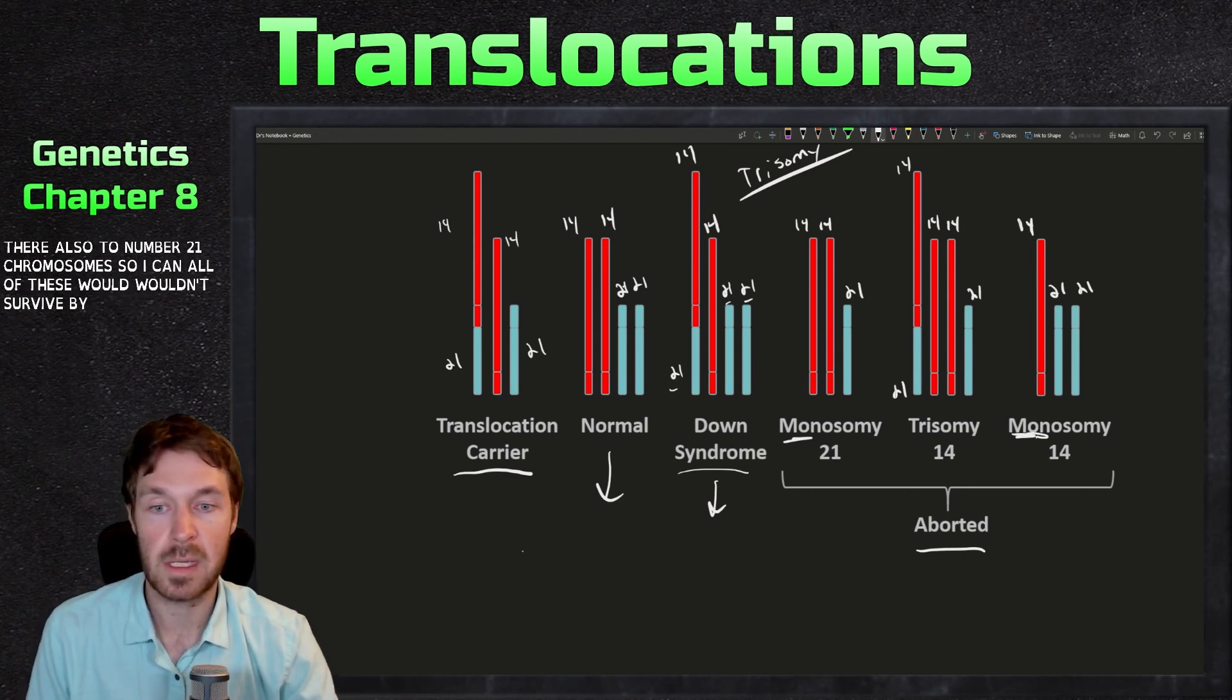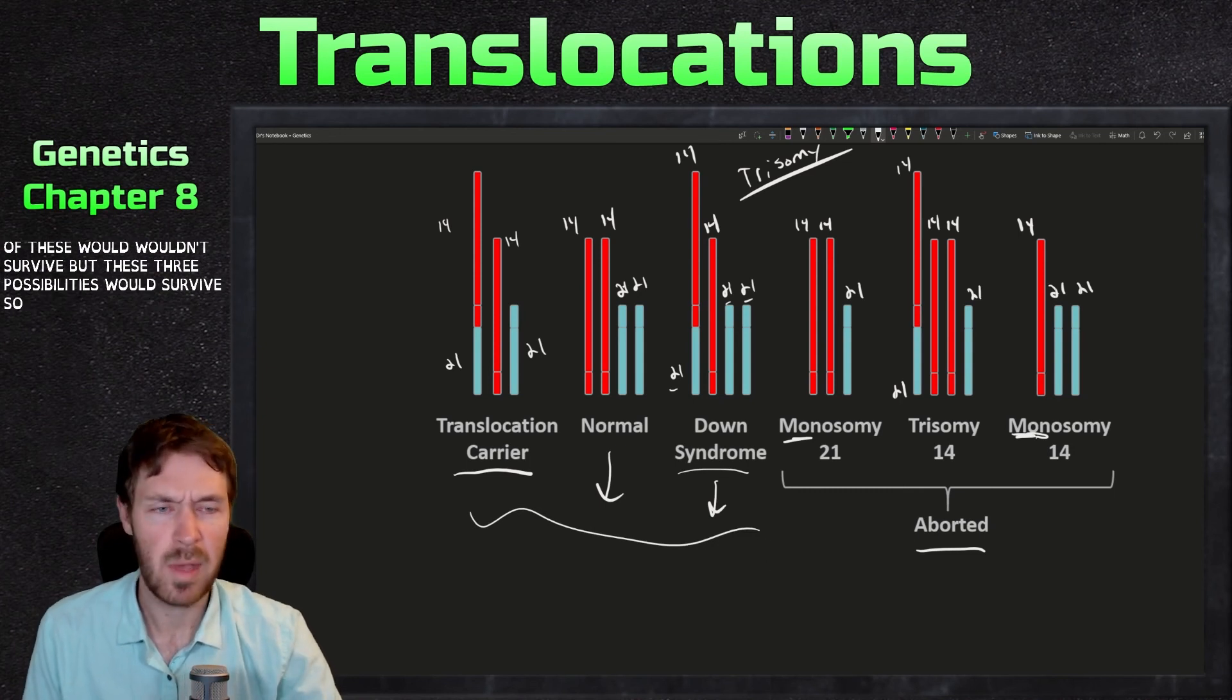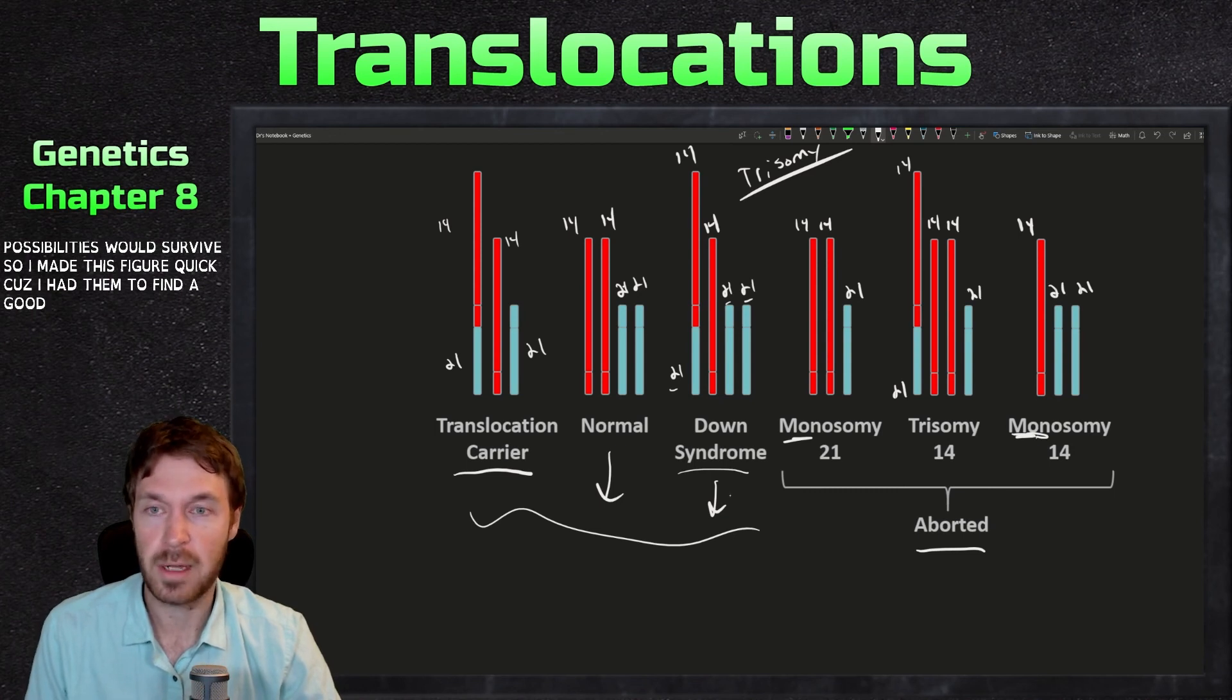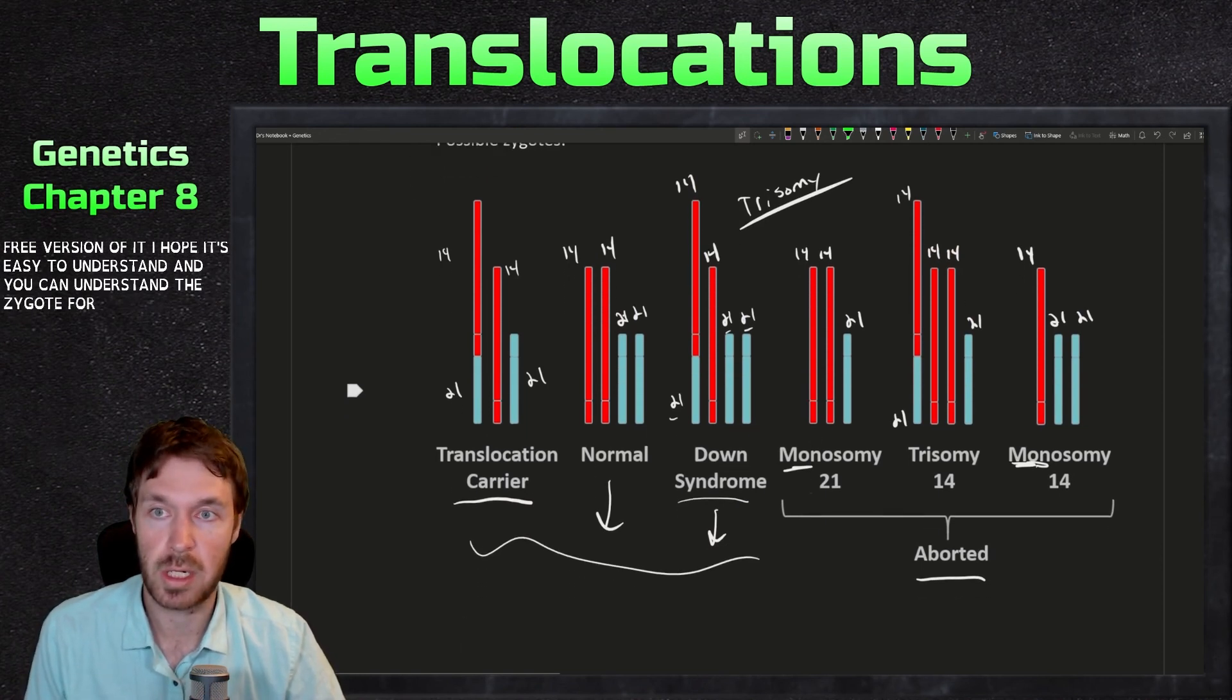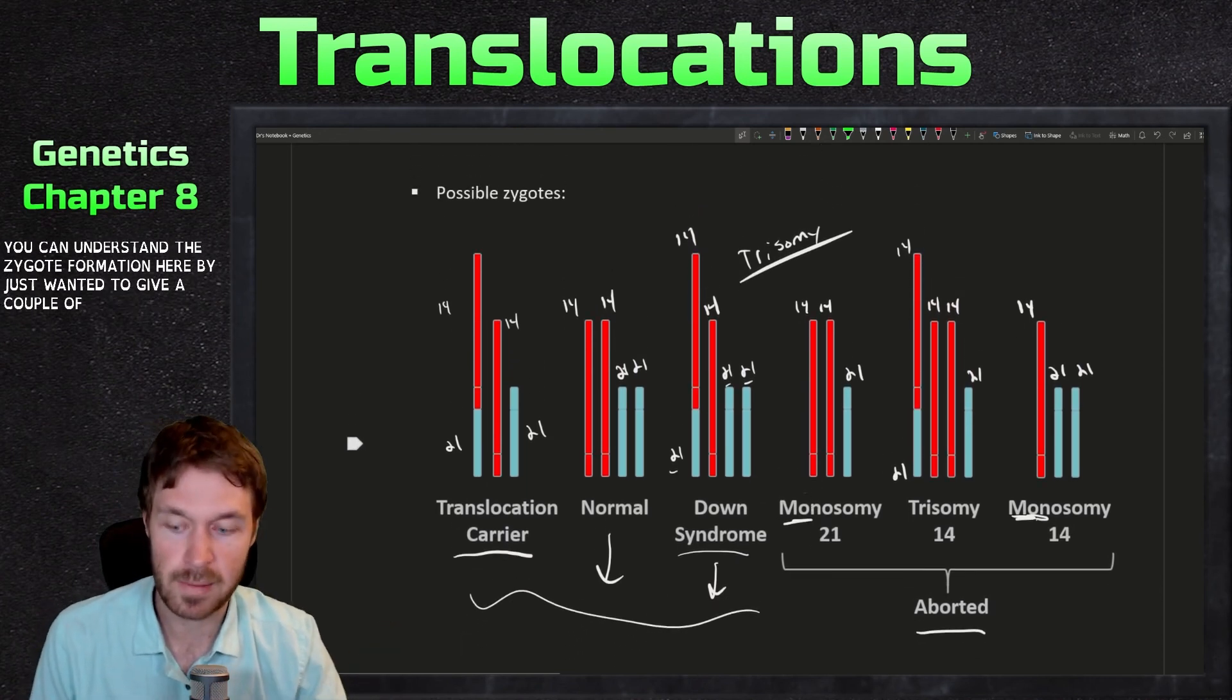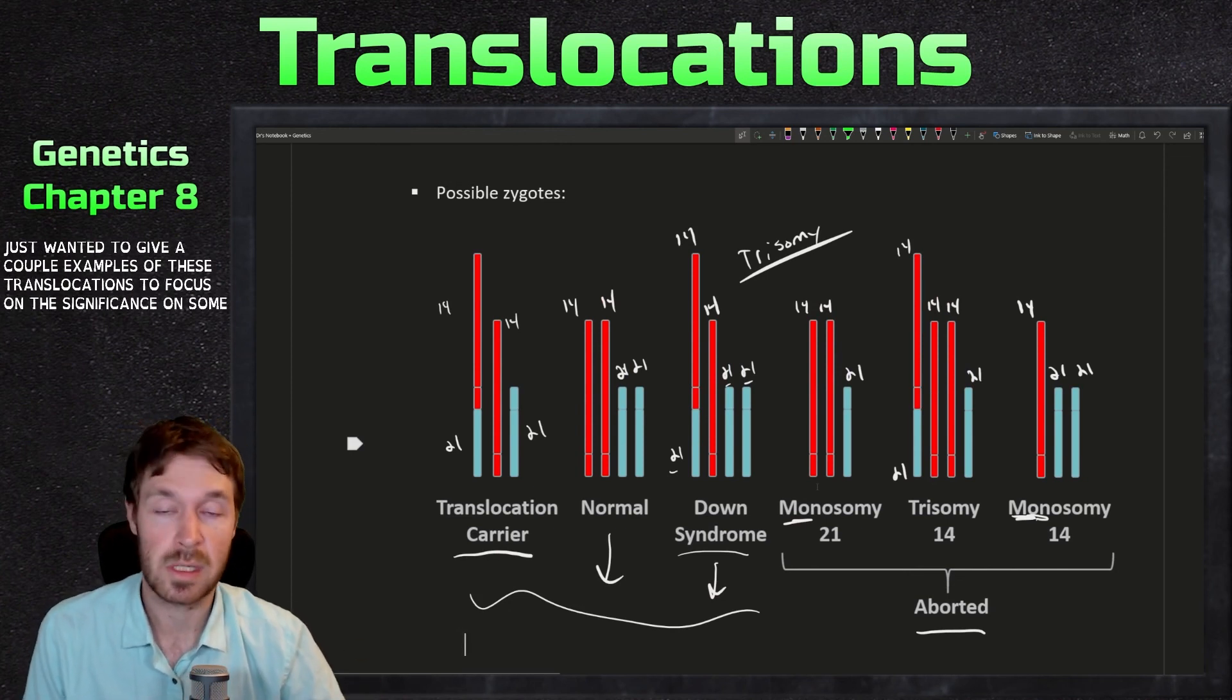So I made this figure quick because I didn't find a good free version of it. So I hope it's easy to understand and you can understand the zygote formation here, but I just wanted to give a couple examples of these translocations to focus on the significance on some certain diseases.